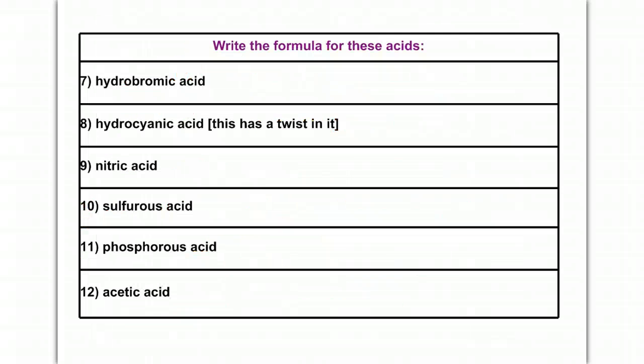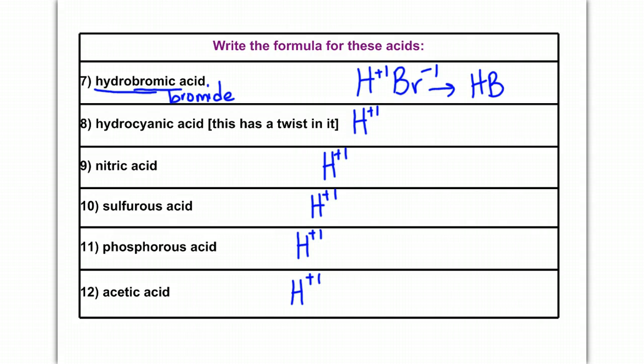Let's do the reverse. If I give you the name, then you write me the formula. All of them start with hydrogen. So, really, you can go ahead and start by putting H for each of them. And hydrogen has a plus-one charge, so we'll put plus-one for all of them. Now, it's a matter of figuring out the anion. Because this started with hydro, and it's bromic acid, my anion is bromide, which on the periodic table is Br-1. Our charges, plus-one, minus-one, will cancel, giving me HBr.